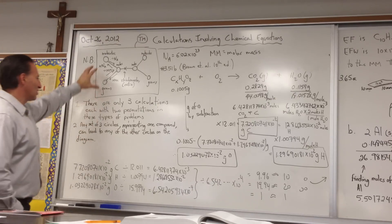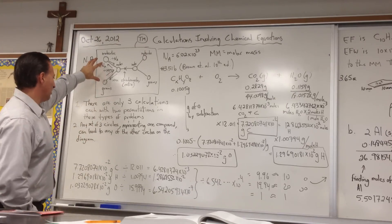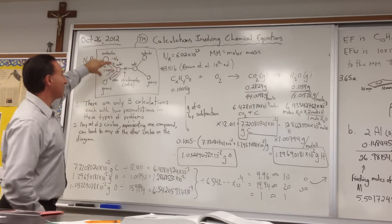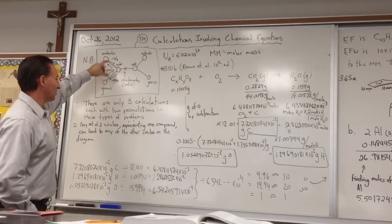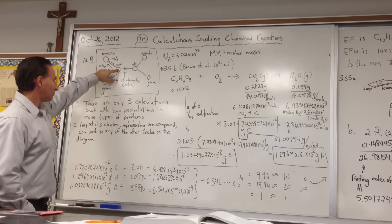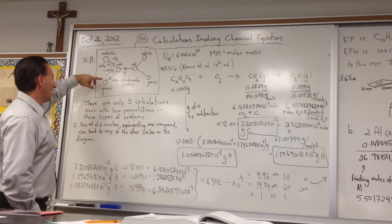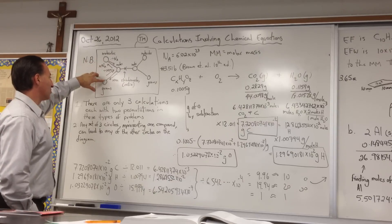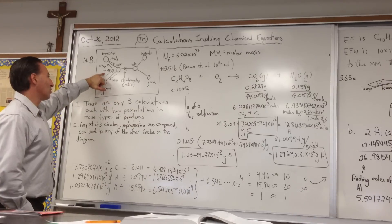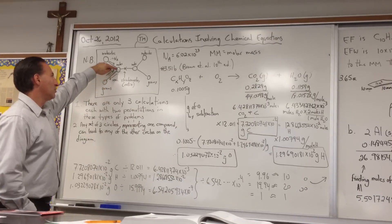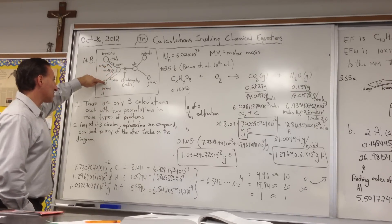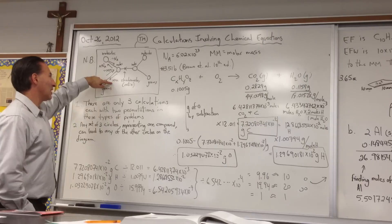Any set of three circles represents one compound and it can lead you to any set of three other circles, or even within the same set of circles. If you want to go from grams of a substance to moles of a substance, you simply divide by its molar mass. If you want to go from moles to grams, you multiply by its molar mass.